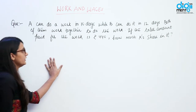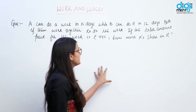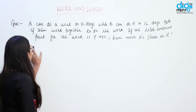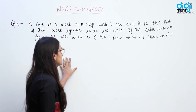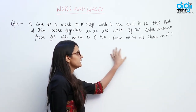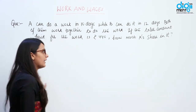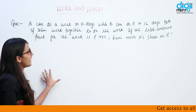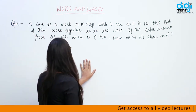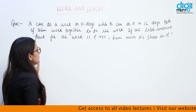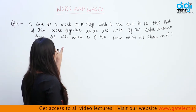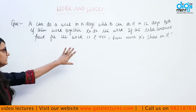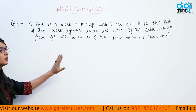A can do a work in 10 days while B can do it in 12 days. Both of them work together to do the work. If the total amount paid for the work is Rs. 440, how much is A's share? The question says A completes the work in 10 days and B in 12 days. If both start together and the total amount is Rs. 440, we need to find A's share.